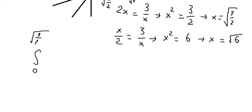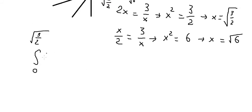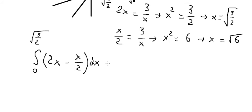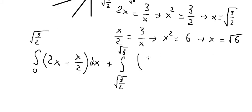For the first part, the line y equals 2x is above y equals x over 2, so the integrand is 2x minus x over 2. For the second part, the curve y equals 3 over x is above y equals x over 2, so the integrand is 3 over x minus x over 2, dx.